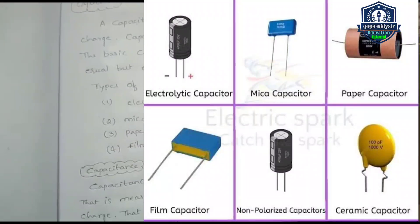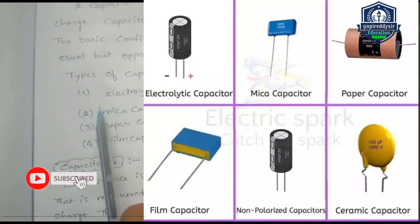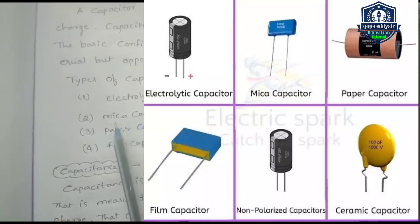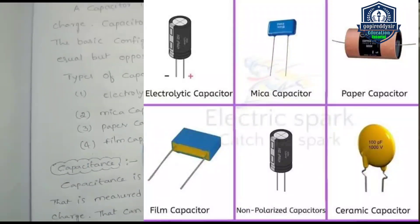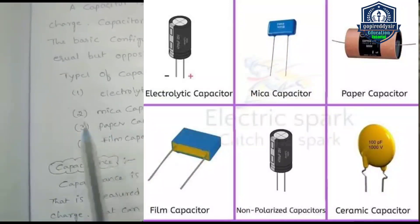Different types of capacitors: first one is electrolytic capacitor, second one is mica capacitor, third one is paper capacitor, fourth one is film capacitor, fifth one is non-polarized capacitor, and sixth is ceramic capacitor.